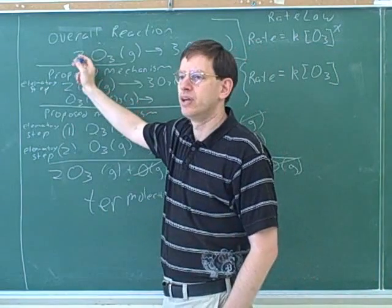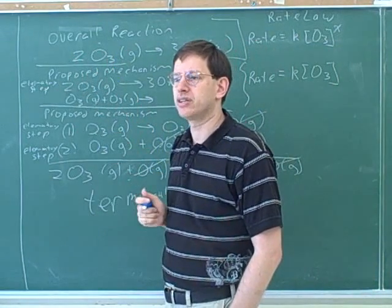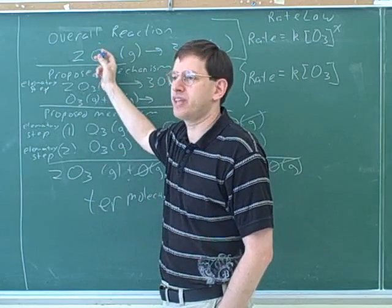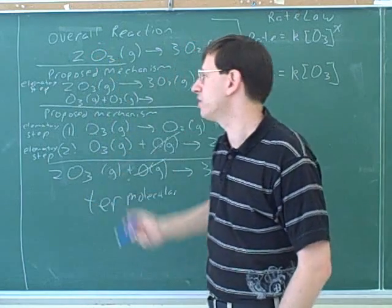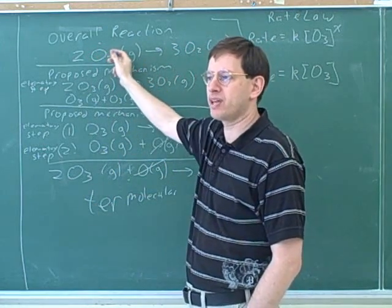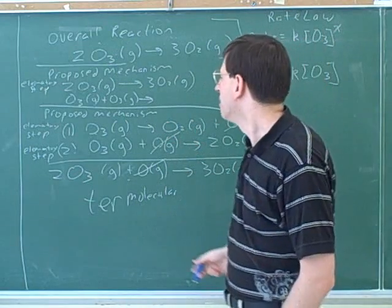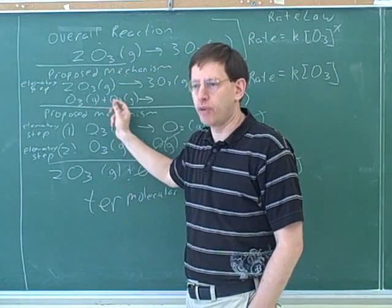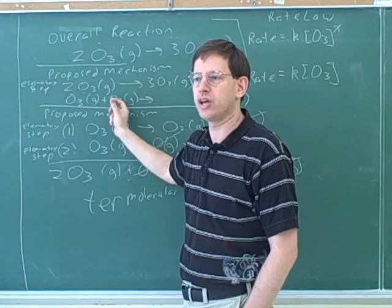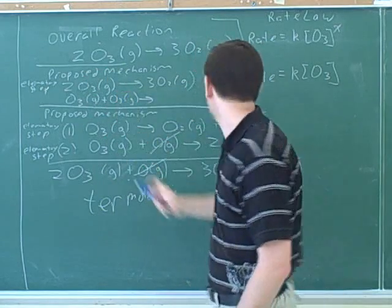Remember, why couldn't we use this number? Why couldn't we use the overall reaction? Because it didn't tell us how the reaction was actually happening. Since this doesn't tell us what's actually happening, it can't tell us the precise rate. But now we're imagining that this is actually what's happening. The 2O3s are bumping into each other, so we can use this to get the right exponent.